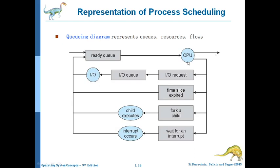If the process requires any input or output, an I/O request is made and it goes to the I/O queue. In the I/O queue, multiple processes may be waiting for the same I/O device. Once the process gets access to that I/O device and uses it, it has to come back to the ready queue. Multiple processes may be waiting in the I/O queue, and once a process gets I/O access it goes back to the ready queue.